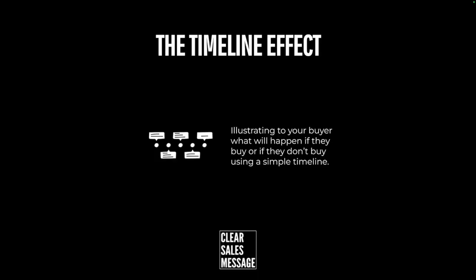So how can you use it? There are a couple of ways you can use timelines in your business or in communicating your product or service. The first one is a timeline of what happens if your buyer doesn't solve the problem — a timeline of the decay, the degradation, the things that are going to go wrong if they delay or don't take action.